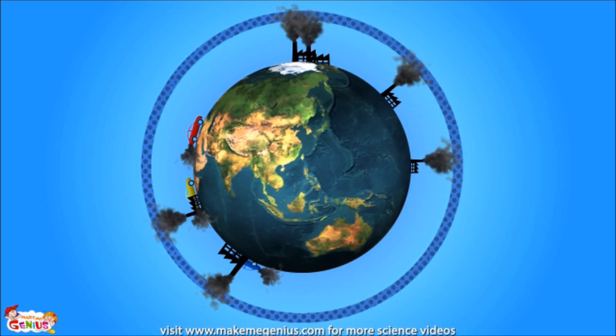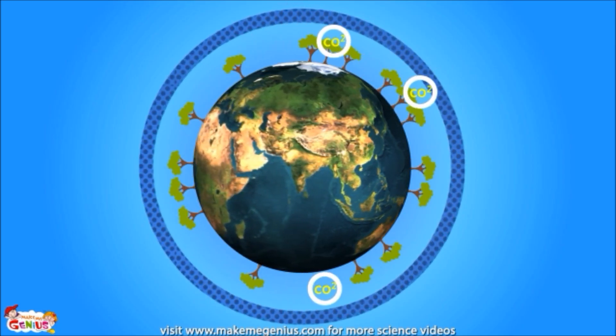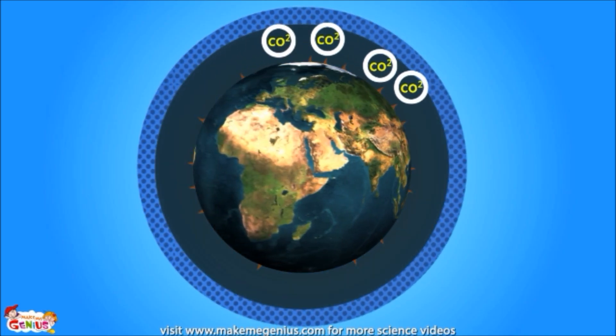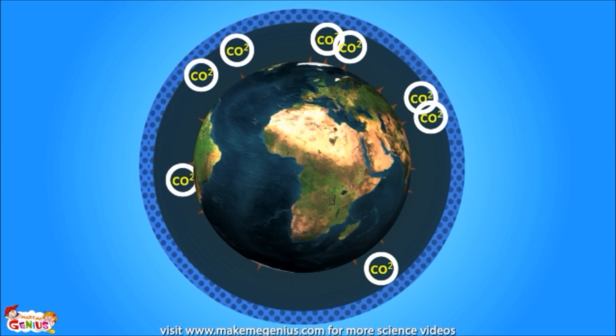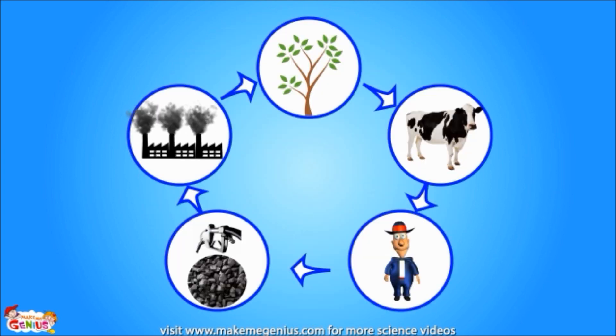It's the job of trees to absorb this carbon, but we're cutting down trees, too. This leaves a lot of carbon in the air, which leads to global warming. And the delicate balance of the carbon cycle is broken by us!